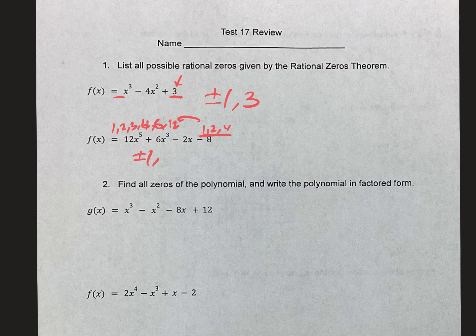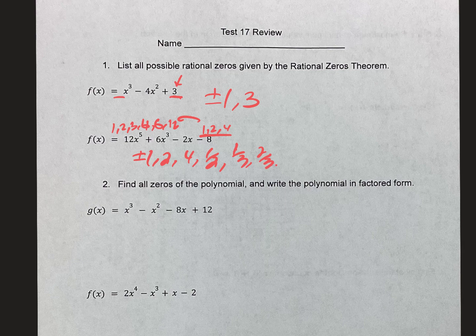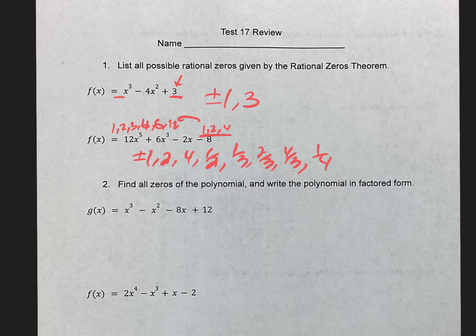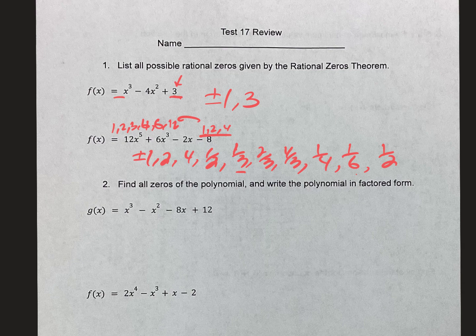I'm going to go plus or minus 1 over 1, 2 over 1, 4 over 1, 1 over 2. I'm not going to put 2 over 2 or 4 over 2 because they're already there. 1 over 3, 2 over 3, 4 over 3, 1 over 4. I'm not going to put 2 over 4, it's there. 4 over 4 is there. 1 over 6. I don't have to put 2 over 6 because 1 third is already there. And then 1 over 12. 2 over 12 is there, it's 1 sixth. 4 over 12 is there, it's 1 third. That's it, that's the whole list.